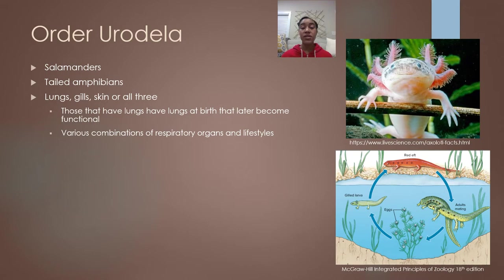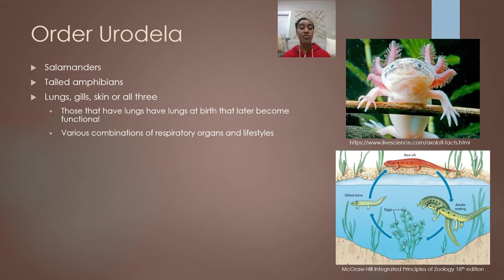Salamanders are tailed amphibians that belong to order Urodella — that name refers to the fact that these are amphibians with tails. Salamanders can undergo respiration using either lungs, gills, or their skin, or a combination of all three. It just depends on the life cycle, lifestyle, and the different species of salamander you're looking at.